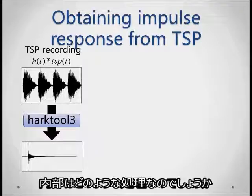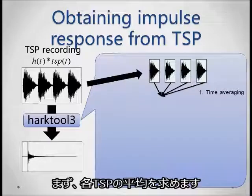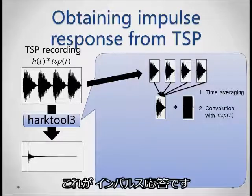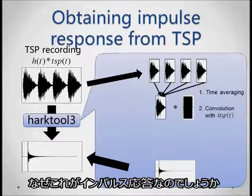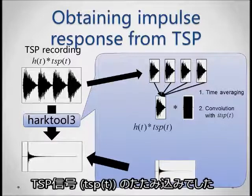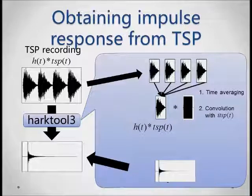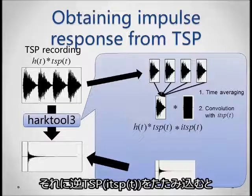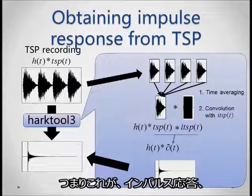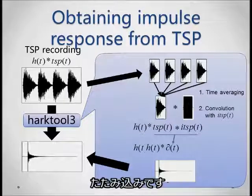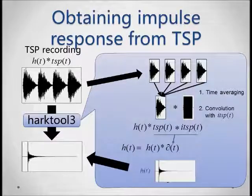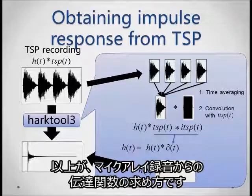But how does it work? First, it takes the average of the multiple TSPs, then it convolves it with the inverse TSP, and this gives us our impulse response. Why does that work? The TSP recording is the convolution of the transfer function H and the TSP. When we convolve it with the inverse TSP, we obtain the basic impulse delta. The impulse response is exactly the convolution between the transfer function and the impulse. Thus, we get H — the impulse response. In other words, we have obtained the transfer function for our microphone array.